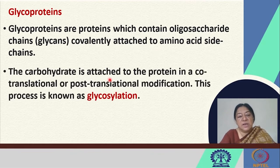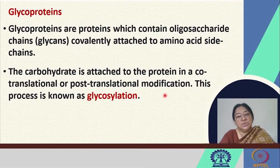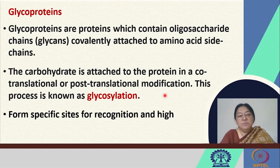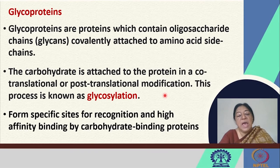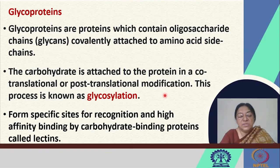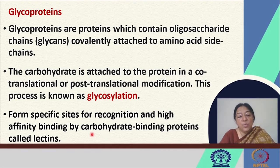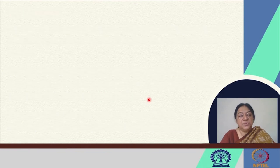The carbohydrate is attached to the protein in a co-translational or post-translational modification. This process is called glycosylation, where the carbohydrate is attached later. Glycosylation forms specific sites of recognition and high-affinity binding by carbohydrate-binding proteins. The association of a carbohydrate with a protein can be covalent, as in these examples, or non-covalent, as in the case of the carbohydrate-binding proteins called lectins.